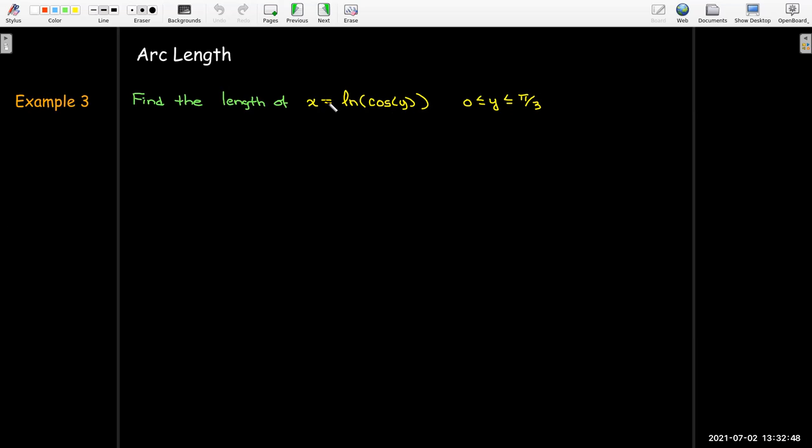So here we've got another x in terms of y and so we're going to evaluate this again using a dy integral. So we're going to find the length of x equals the natural log of cosine of y from y equals 0 to y equals pi over 3. So let's find the derivative. Derivative of natural log would be 1 over cosine of y then use the chain rule. Derivative of cosine of y should be negative sine y.